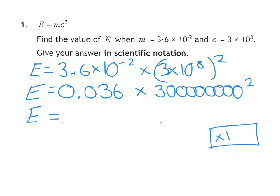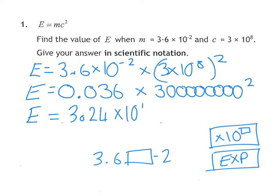To type it in, you'll be using the button that says times 10 with a blank power next to it, or it might have exp. That does the whole times 10 to the power bit. So technically you do 3.6, that button, minus 2, times 3, that button, 8, and then square it. It gives me 3.24 times 10 to the power of 15, already in scientific notation. That second line is only optional if you don't know how to use the scientific notation button.